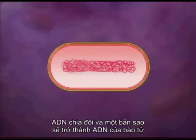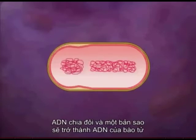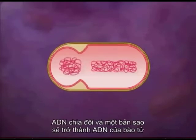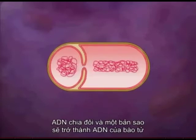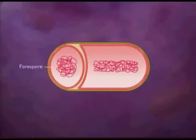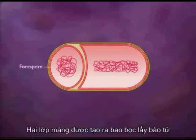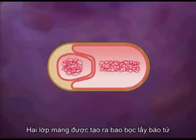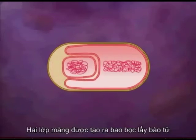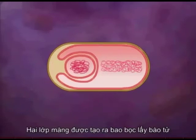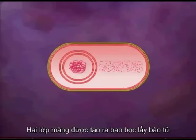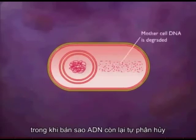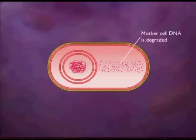Next, the DNA divides into two complete copies and the mother cell membrane invaginates to form the developing forespore. The mother cell membrane continues to grow and engulfs the developing spore. The developing spore is now surrounded by two membrane layers.